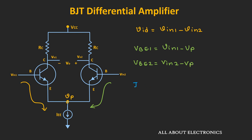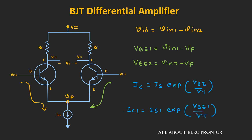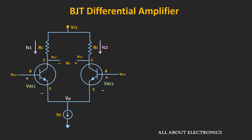The collector current Ic is a function of Vbe: collector current Ic equals Is times e to the power Vbe divided by Vt, where Is is the reverse saturation current and Vt is the thermal voltage. For transistor Q1, collector current Ic1 equals Is1 times e to the power Vbe1 divided by Vt. Similarly, for transistor Q2, collector current Ic2 equals Is2 times e to the power Vbe2 divided by Vt.